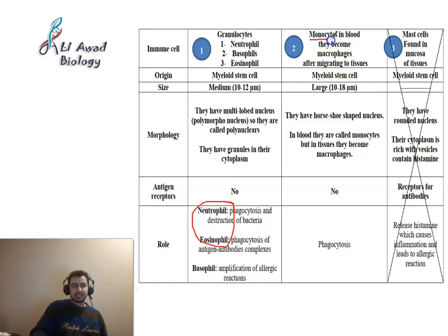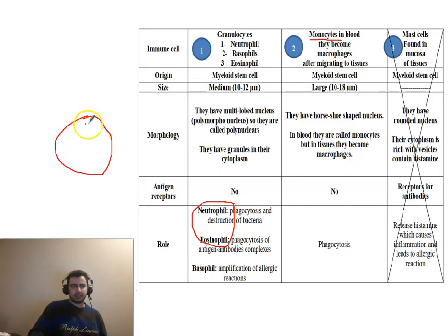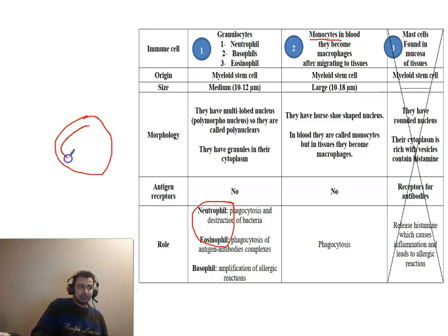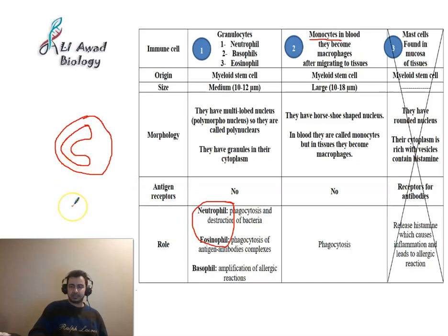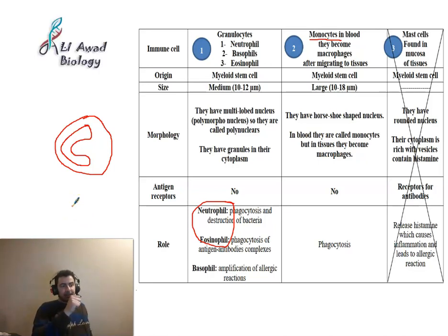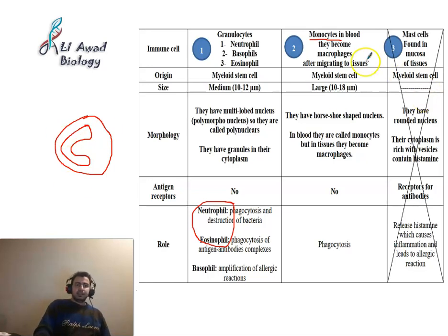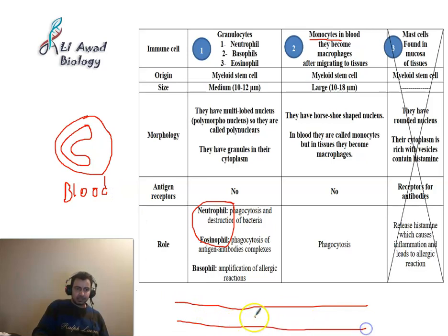The second type of cells derived from myeloid stem cells is called monocytes. Monocytes are large cells, larger than granulocytes. They have a horseshoe-shaped nucleus. They are found traveling in the blood.